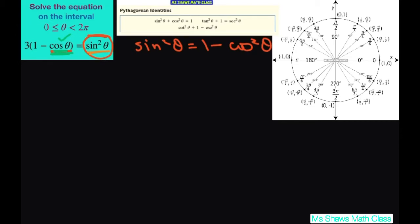So now I'm going to go ahead and simplify this by distributing. You get 3 minus 3 cosine of theta equals, and you substitute and write this as 1 minus cosine squared of theta.